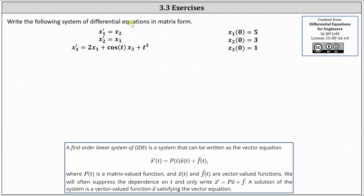To write the system in matrix form, we want to write the vector equation shown below using matrices, where the vector equation is x prime of t equals P of t times x of t plus f of t. Here P of t is a matrix-valued function, and x of t and f of t are vector-valued functions.